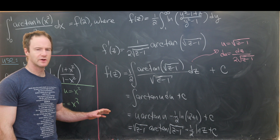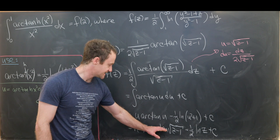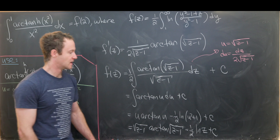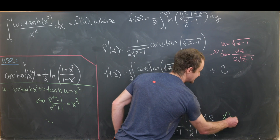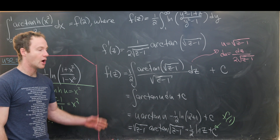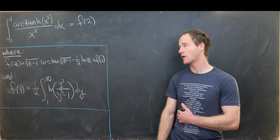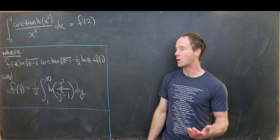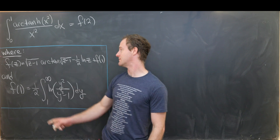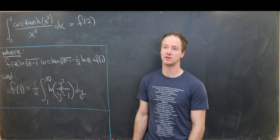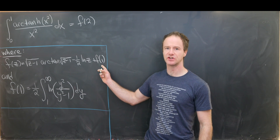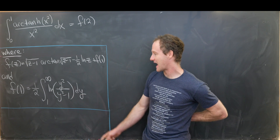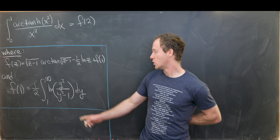To find the constant, evaluate at z = 1: the √(z−1)·arctan(√(z−1)) term vanishes and ln(1) = 0, so the constant C equals f(1). And f(1) can be computed from the original integral form: f(1) = one half times the integral from 1 to infinity of ln(y²/(y²−1)) dy.